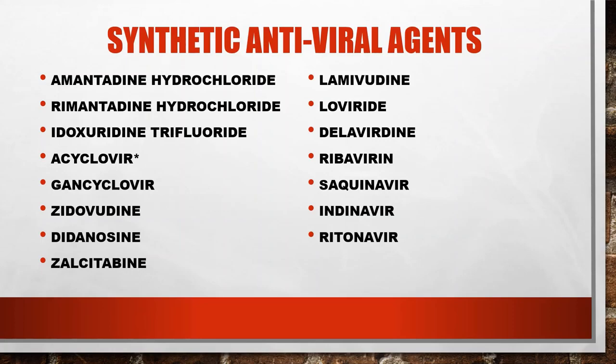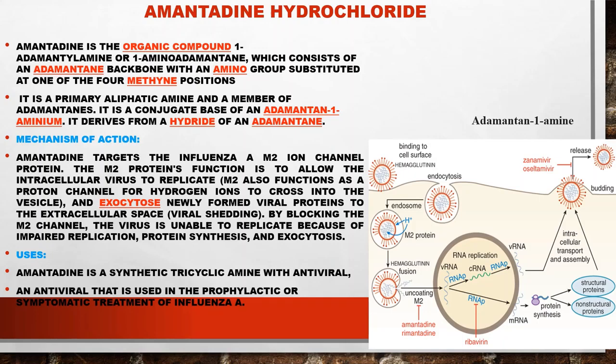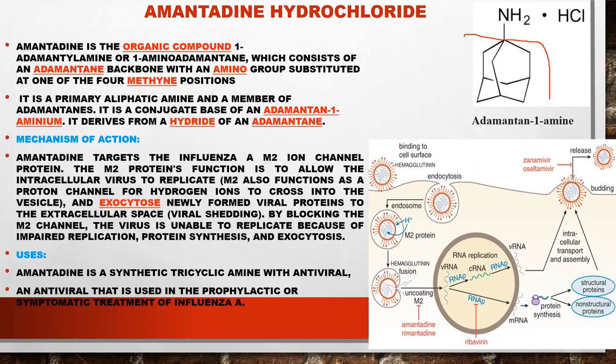The first drug is amantadine hydrochloride. This structure features an adamantane ring — it is an organic compound, 1-adamantylamine or 1-aminoadamantane, which consists of an adamantane backbone with an amino group substituted at one of the four methyl positions. It is a primary aliphatic amine and a member of adamantanes, conjugate base of adamantan-1-aminium, deriving from a hydride of adamantane.